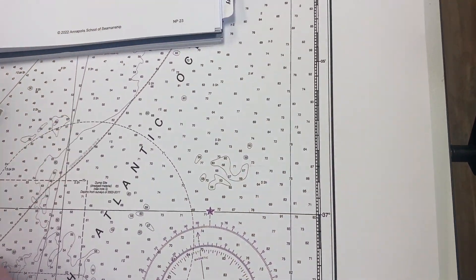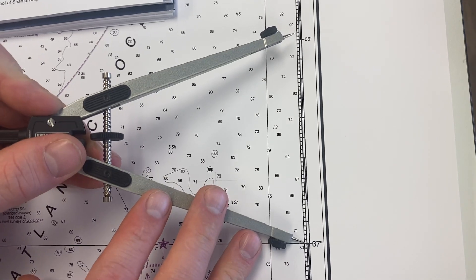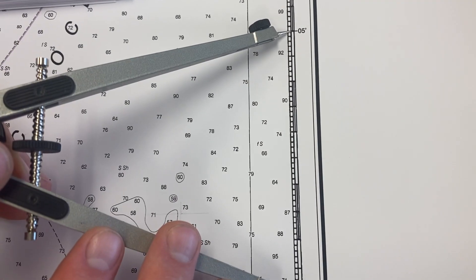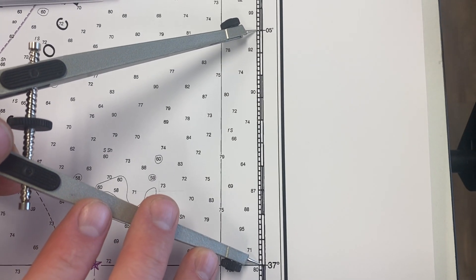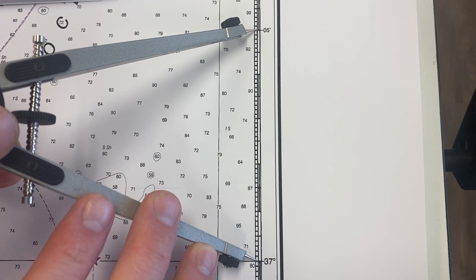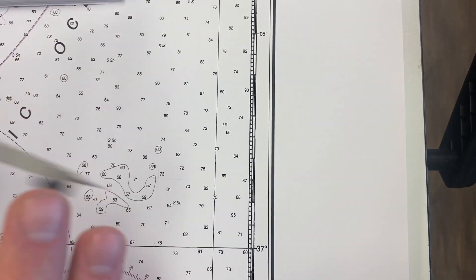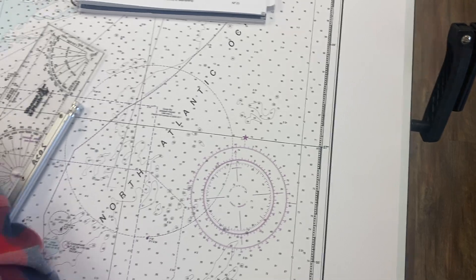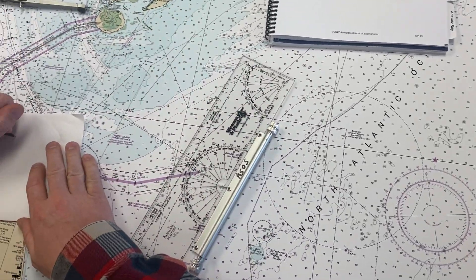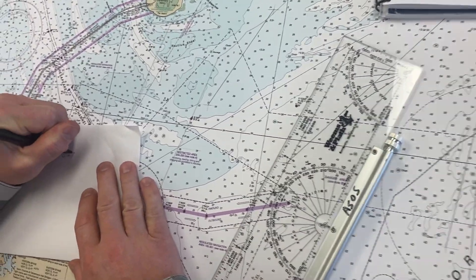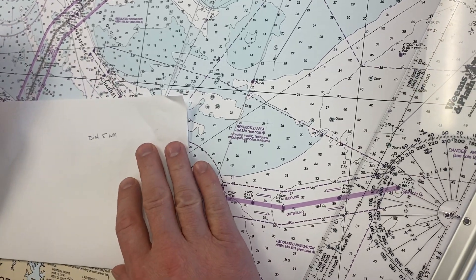I'm going to go over to our latitude scale and measure the distance between these two points, which comes up right at five nautical miles. All right, so I have a distance between the two points of five nautical miles.